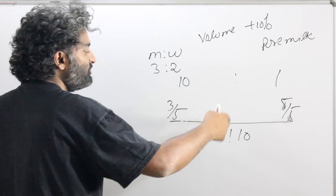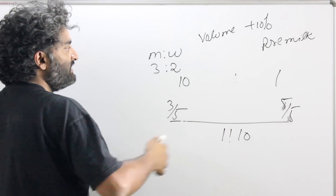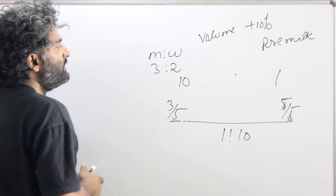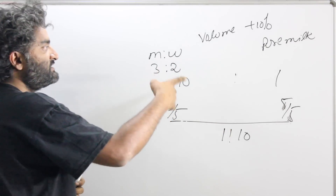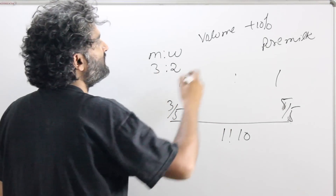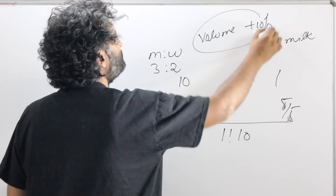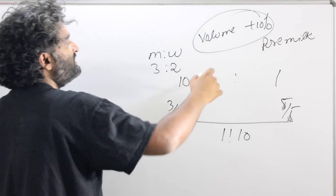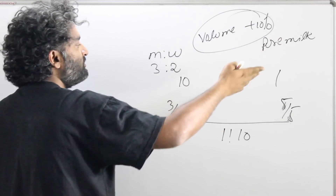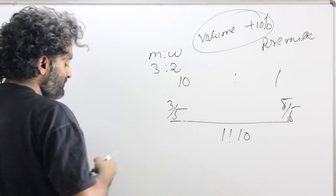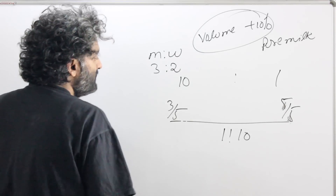If the same process is done once more, you'd have to do the scale once more. But there are better ways to handle questions where only the volume is being increased by adding either pure milk or just water.